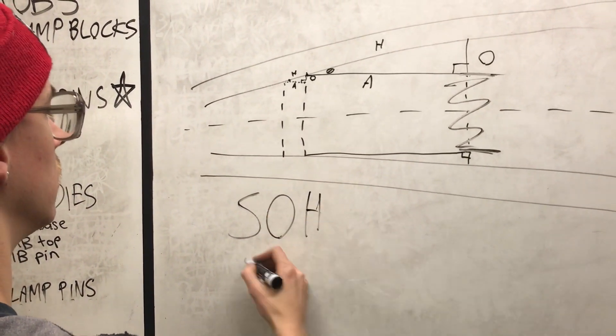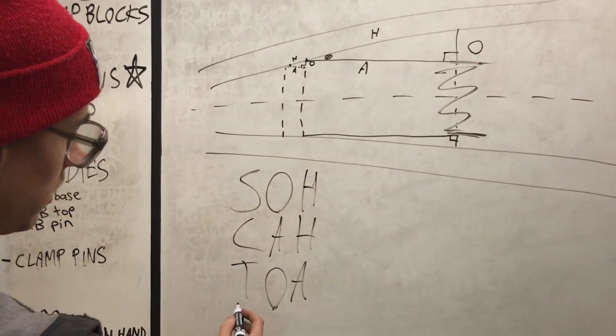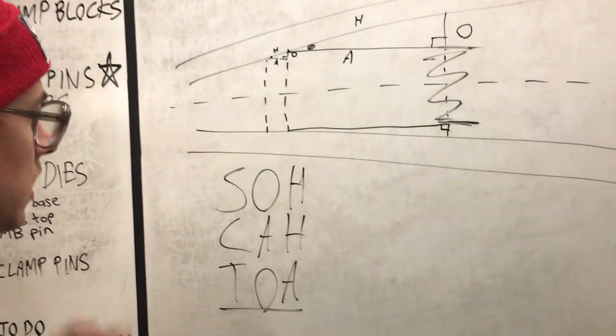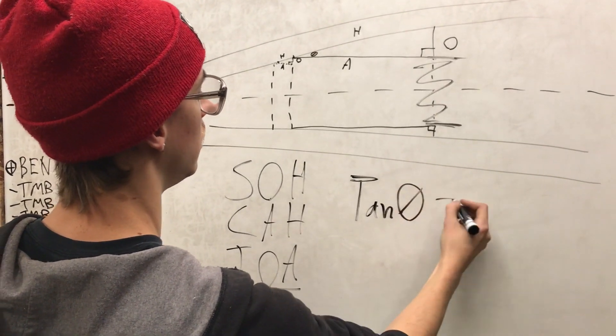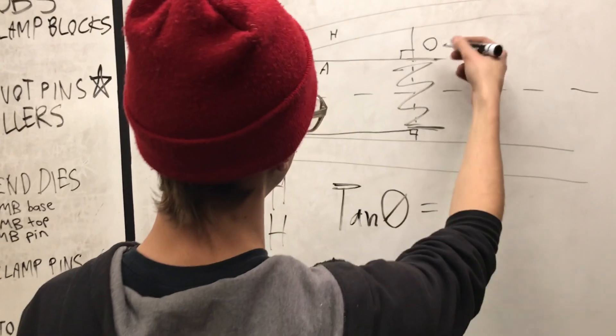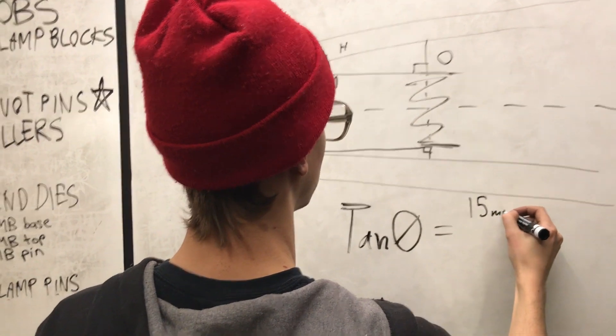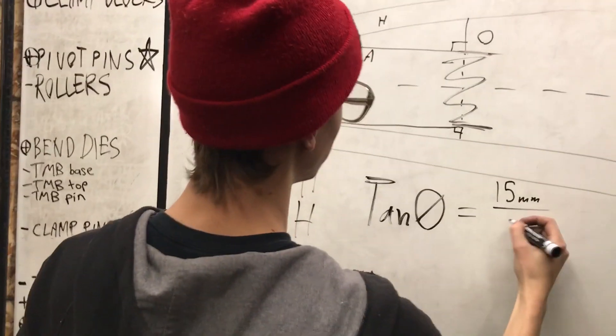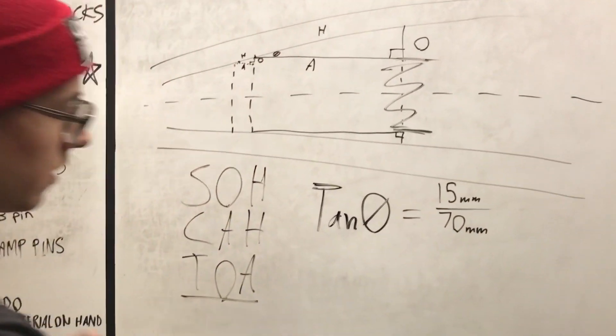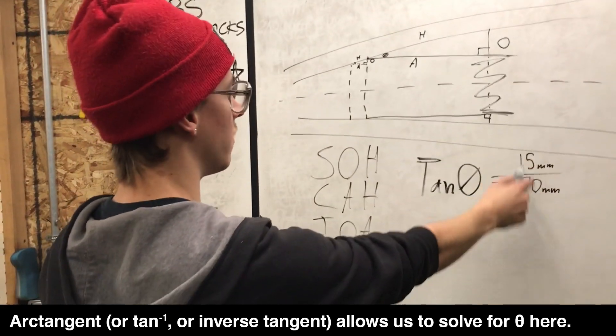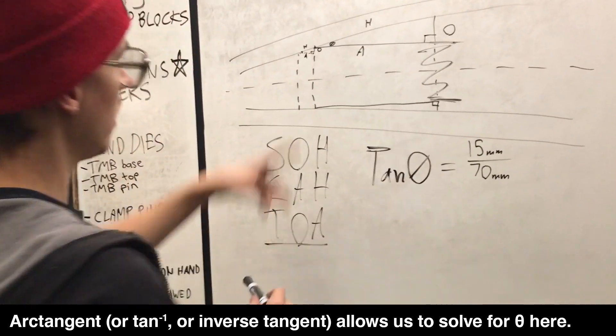So I'll write these out again. SOH CAH TOA. So this time it's a tangent function. T for tangent, opposite over adjacent. So tangent of theta equals opposite, which, what would it be in this case? Let's say it's like 15 millimeters. And we'll say that that's like 70 millimeters or something. I don't know. It would depend on the circumstances of the frame you're working with. And so again, it would be an arc tangent function. You would divide these, and then you would hit arc tangent, and it would give you the angle that you needed to miter at from that orientation.